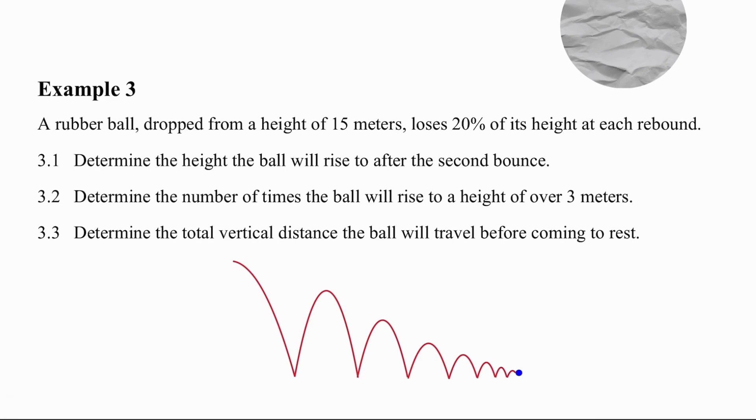Example three is very different. We are now looking at a rubber ball. The rubber ball is being dropped from a height of 15 meters, so if you look at the very rough sketch here the ball is coming down. It loses 20% of its height at each rebound so you'll notice that when it rebounds it's not going as high as it was before. And this pattern of losing height continues with each consecutive bounce so the ball goes a little less high on each bounce. You have three questions to answer. I want you to pause the video, try all three questions one after the other and then we will go through them one at a time.